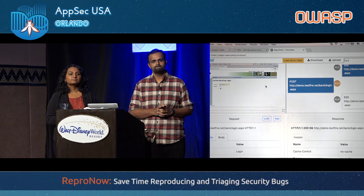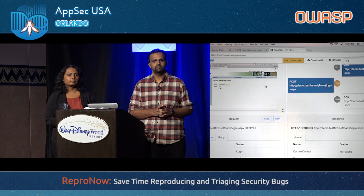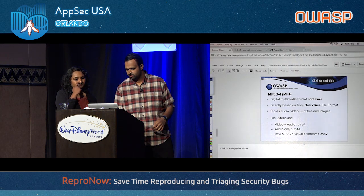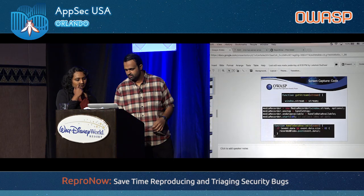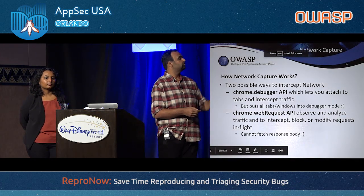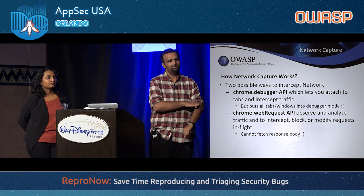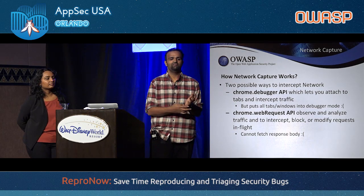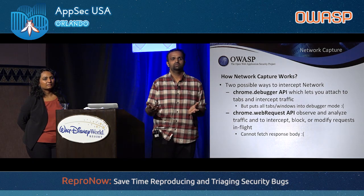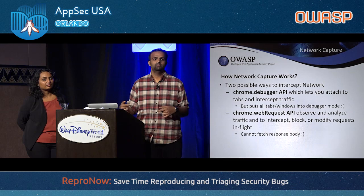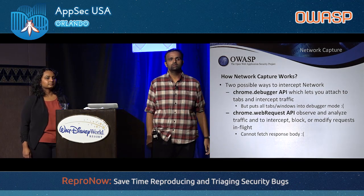Question: it looks like you're capturing request bodies but not response bodies — is that a limitation of the API? Yes, chrome.webrequest API doesn't let you fetch the response body. We could use the debugger API for that, but honestly we don't need the response body — the point is to replay the request and check if it's a valid bug. If we had the response body, they could modify it and send it to us, which is not desirable. We want to replay and verify independently.